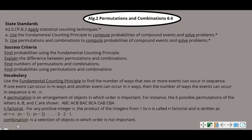Today we're going to talk about permutations and combinations. Your state standard is listed first, and beneath that is your success criteria. So today you need to be able to find probabilities using the fundamental counting principle, explain the difference between permutations and combinations, find numbers of permutations and combinations, and find probabilities using permutations and combinations.